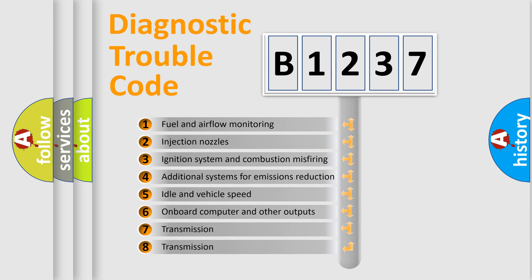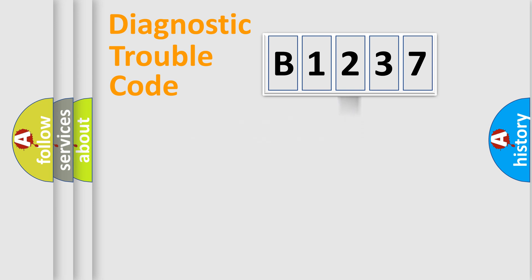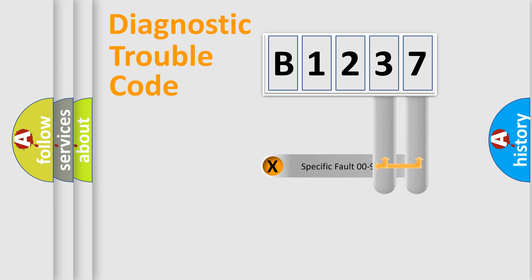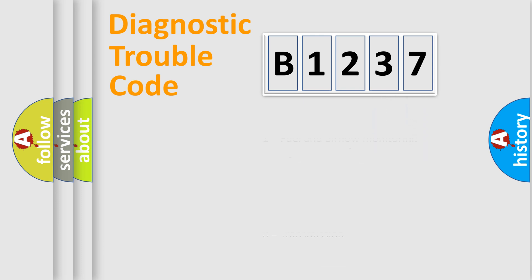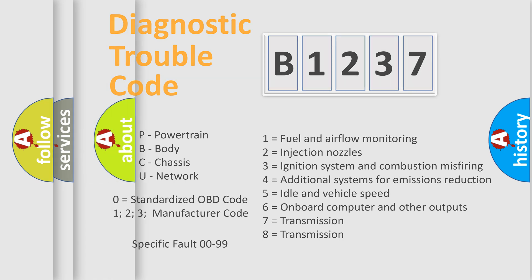The third character specifies a subset of errors. The distribution shown is valid only for the standardized DTC code. Only the last two characters define the specific fault of the group, and this division is valid only when the second character code is expressed by the number zero.